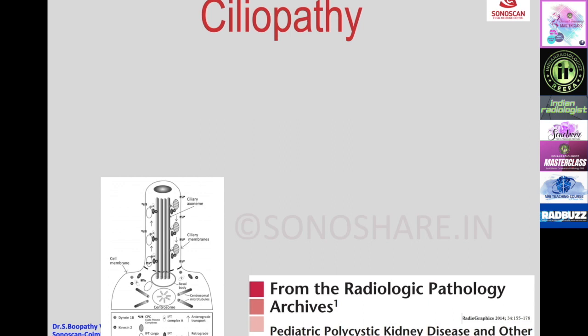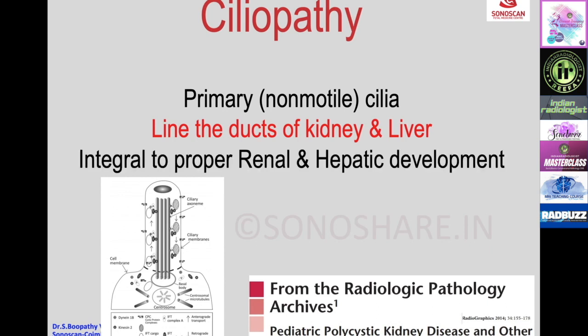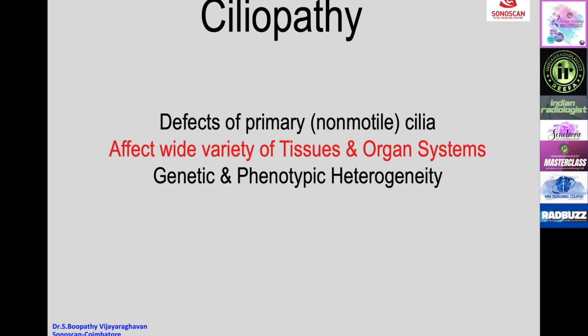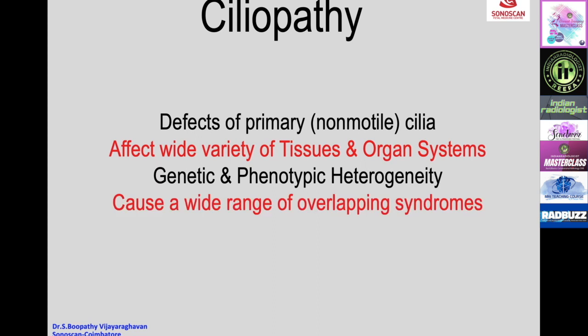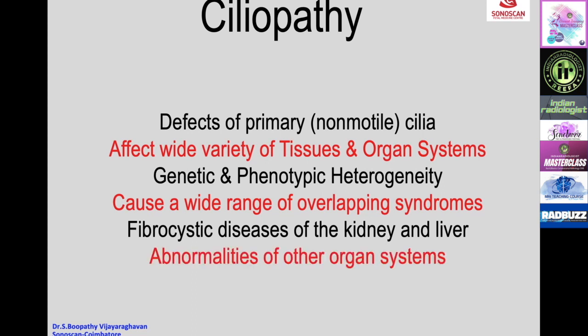One recent advancement in renal cystic disease is awareness about ciliopathy. Ciliopathy is a genetic disease group involving the primary non-motile cilia in cells which line the ducts of the kidney and liver, forming an integral part of proper renal and hepatic development. Defects of primary cilia affect a wide variety of tissues and organ systems, with genetic and phenotypic heterogeneity causing a wide range of overlapping syndromes. Basically, it involves fibrocystic disease of the kidney and liver with or without abnormalities of other organ systems.